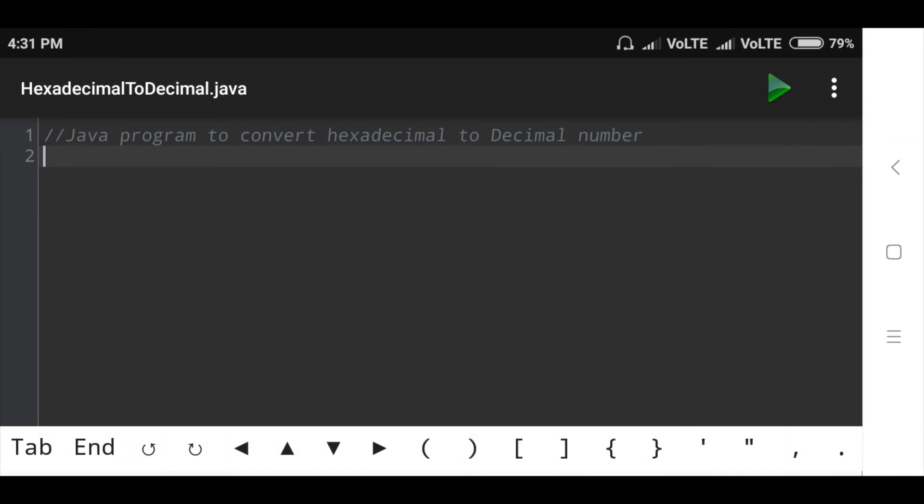We can simply use Integer.parseInt method and pass the base as 16 to convert the given hexadecimal number to equivalent decimal number.